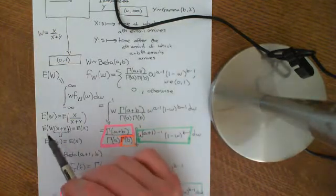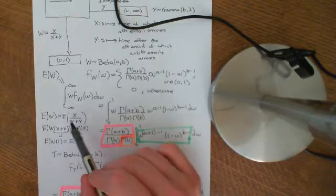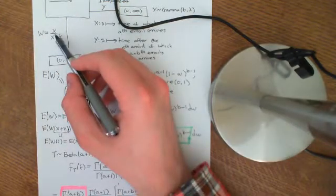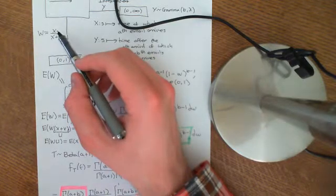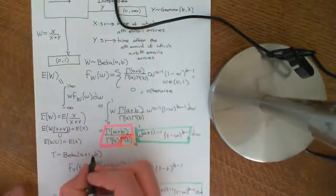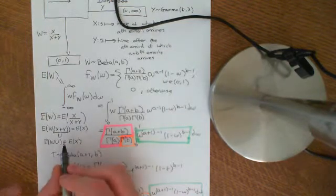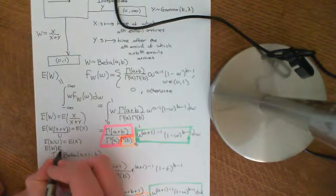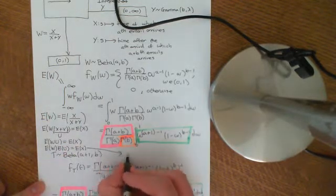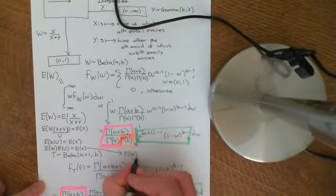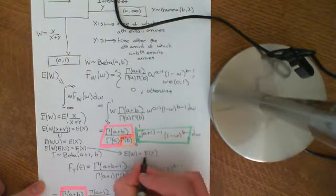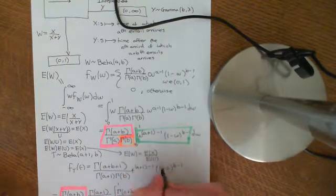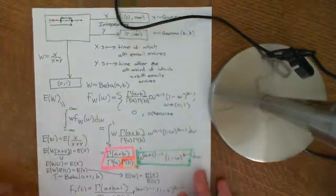So I construct this random variable W times X plus Y, and we know that that is going to be the random variable X. That was our pink transformation before — W times U was equal to X. Now, if W and U were both independent, then this would be equal to the expected value of W times the expected value of U, and that would equal the expected value of X. Therefore, that would imply that the expected value of W was just equal to the expected value of X divided by the expected value of U.